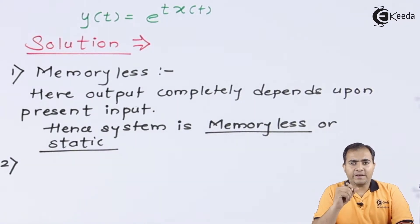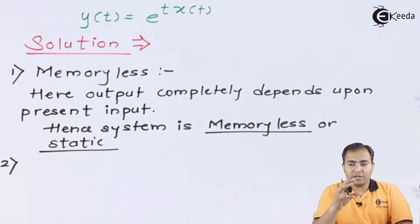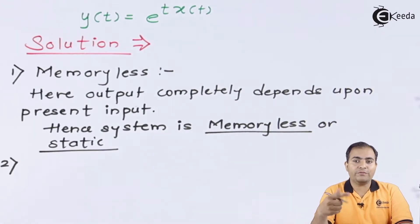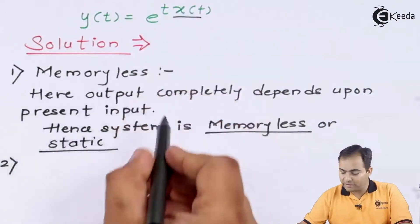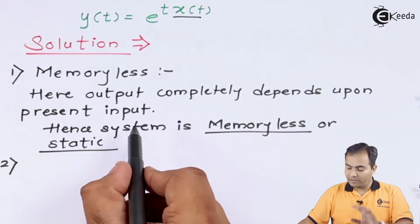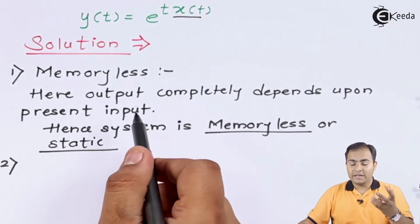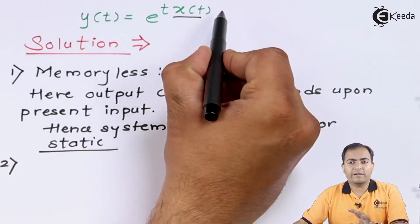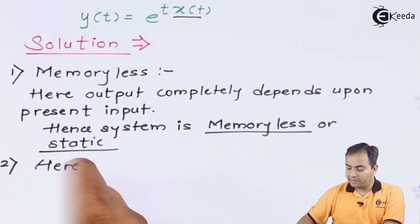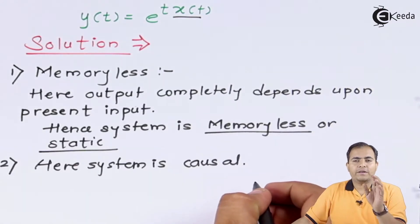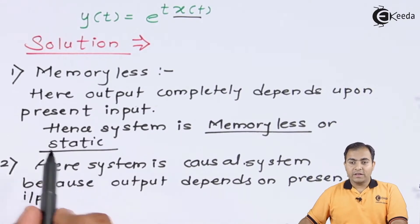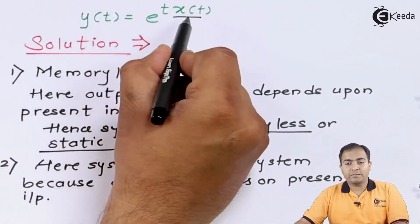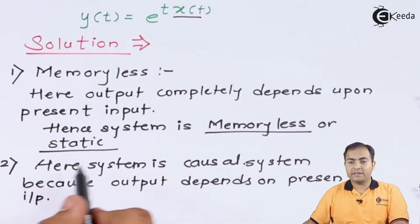The second property is causality. We compare the time values: in a causal system, output depends only on present and past inputs, whereas in a non-causal system it also depends on future values. Here, y(t) depends completely on the present input x(t), and no future values are involved. Hence the system is causal. The output completely depends on the present input only.